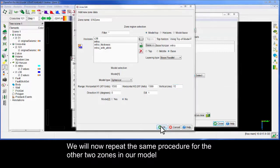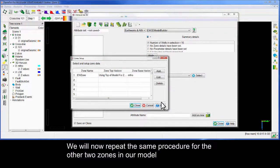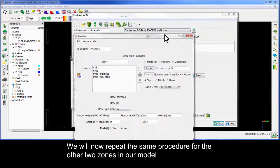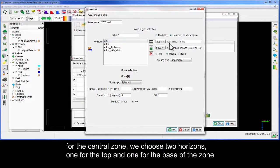We will now repeat the same procedure for the two other zones in our model. For the central zone, we choose two horizons, one for the top, and one for the base of the zone.